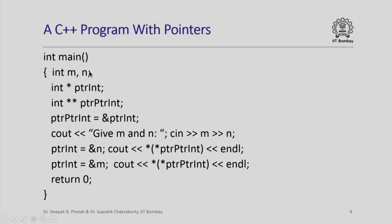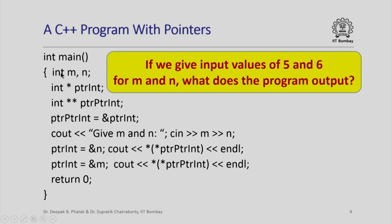We have two integer variables named m and n. The variable pointer_int is a pointer to an integer. The variable pointer_pointer_int is a pointer to a pointer to an integer. Given this program, one might ask that if we give input values of 5 and 6 for m and n, what does the program output when I execute these cout statements?